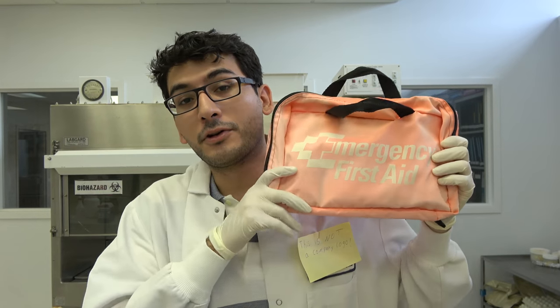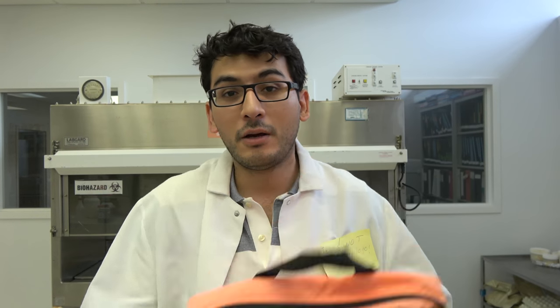Rule number three. Always know where your emergency first aid kit is. Put it somewhere where everyone can easily find it. It's not obstructed by anything. So that if you're an idiot and you burn your hand, you know exactly where to run. A lot of labs also have showers, like eye washes, stuff like that. I don't have that here. Rule number four.